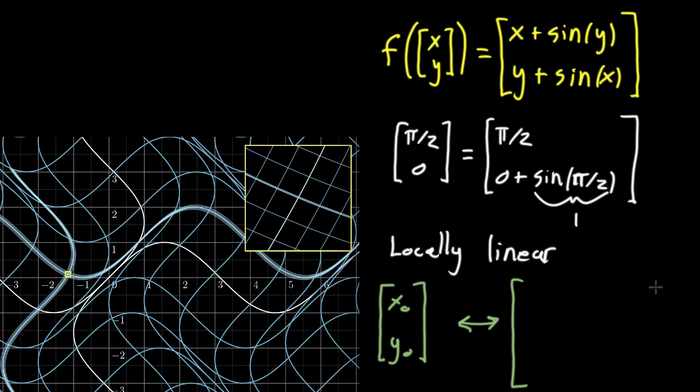this should correspond in some way to the linear transformation that it looks like around it. There should be some kind of matrix, some two-by-two matrix that represents the linear transformation that this function, this much more complicated function, looks like around that point. So this idea of zooming in is what we mean by local. And in the next video, I'm going to show you what this matrix looks like in terms of partial derivatives for our original function. See you then.